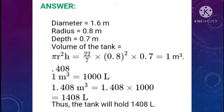Since 1 m³ = 1000 liters, therefore 1.408 m³ = 1.408 × 1000 = 1408 liters. Therefore, the water tank will hold 1408 liters of water.